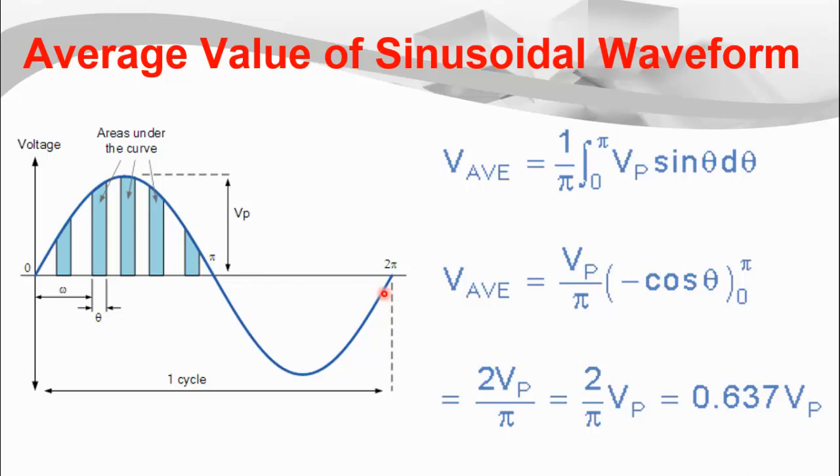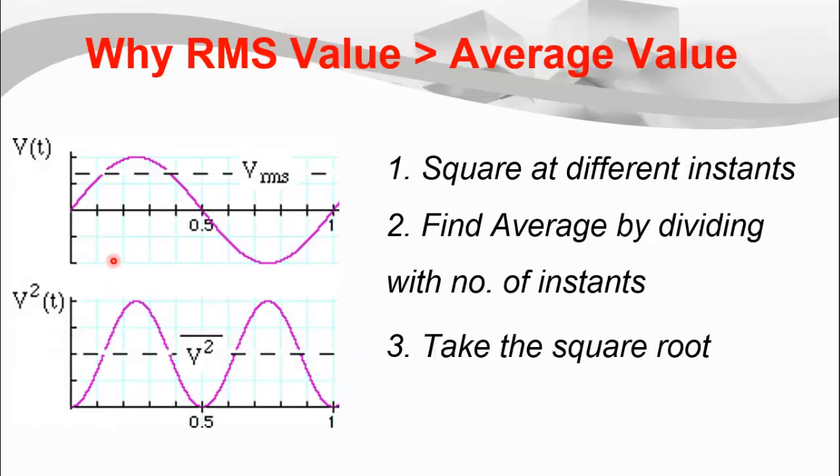Let's suppose we have this waveform. The first step is to take the square of this waveform. In that case the waveform will have all positive values in one complete cycle. The next step is to take the magnitude at different instances.